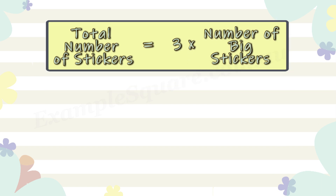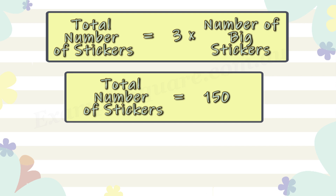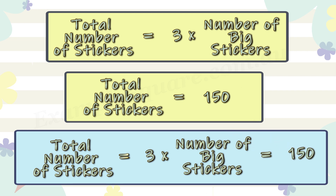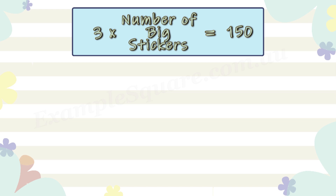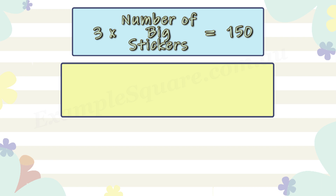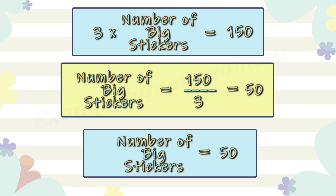Since the total number of stickers equals 150, we have 150 equals 3 times the number of big stickers. That means one third of 150 equals the number of big stickers. One third of 150 is 50, so the number of big stickers is 50.